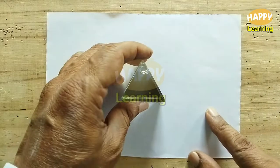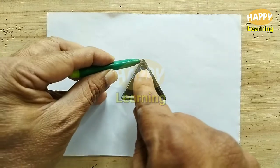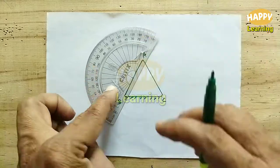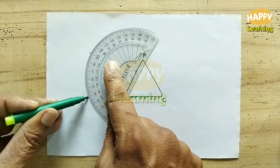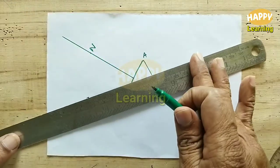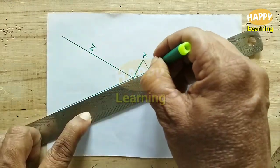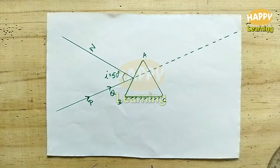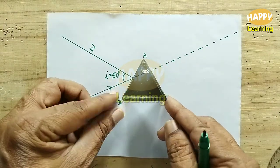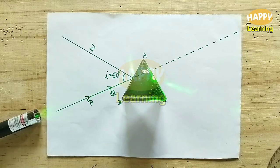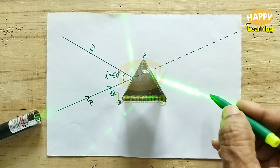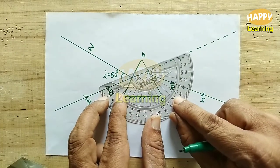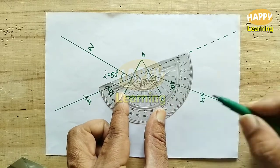The same process is repeated for another angle of incidence. For the ABC prism with base BC, draw the normal and incident ray on the first refracting surface. This time the incident ray makes an angle of 50 degrees — i equals 50 degrees. Place the prism, project the laser beam along the incident ray, and note down the position of the emergent ray RS. The angle of deviation here is 42 degrees.